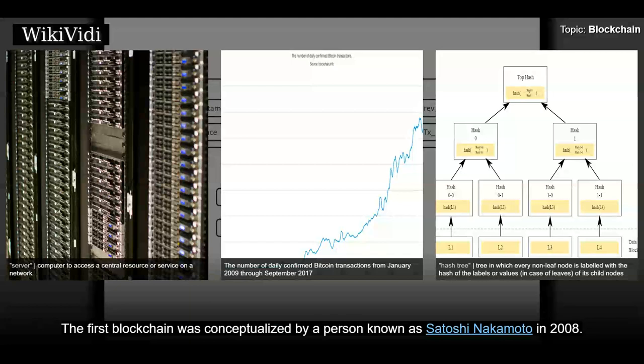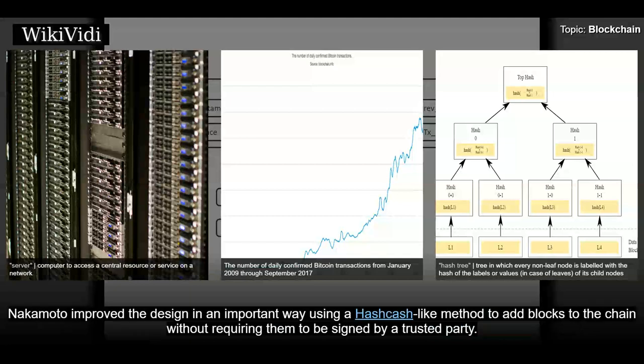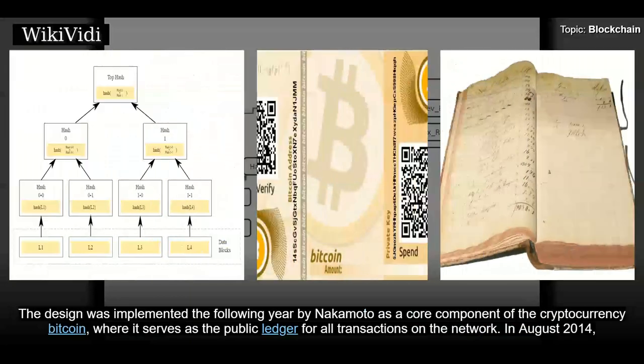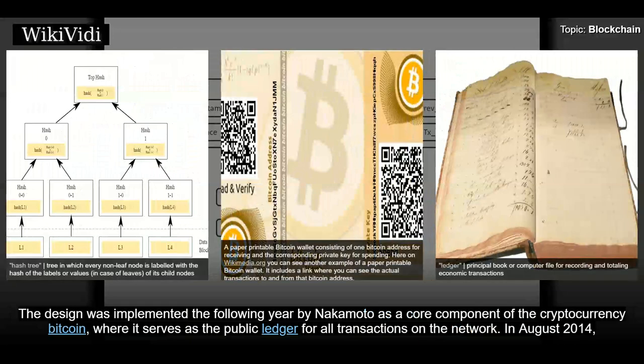The first blockchain was conceptualized by a person known as Satoshi Nakamoto in 2008. Nakamoto improved the design in an important way using a hashcash-like method to add blocks to the chain without requiring them to be signed by a trusted party. The design was implemented the following year by Nakamoto as a core component of the cryptocurrency Bitcoin, where it serves as the public ledger for all transactions on the network.